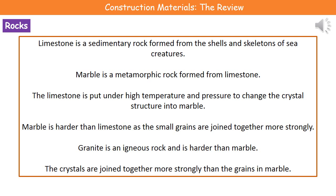Moving onto marble, this is a metamorphic rock. Metamorphic rocks are formed when existing rocks are put under extreme heat and pressure. The rock put under extreme heat and pressure to form marble is limestone. What we find is that it's changed the crystal structure under that heat and pressure. Marble is harder than limestone because the small grains are joined together more strongly in marble than they are in limestone.